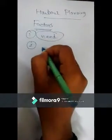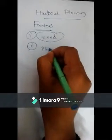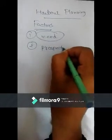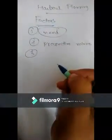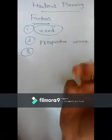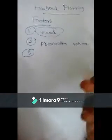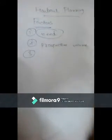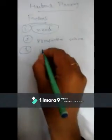The second factor is the prospective volume of seaborne commerce. The third point is the availability of inland communication by both land and water. The need for a harbour may arise in a number of ways — for example, a seaport may be needed to serve a nearby inland city which has grown to the extent of requiring an outlet for its foreign commerce.